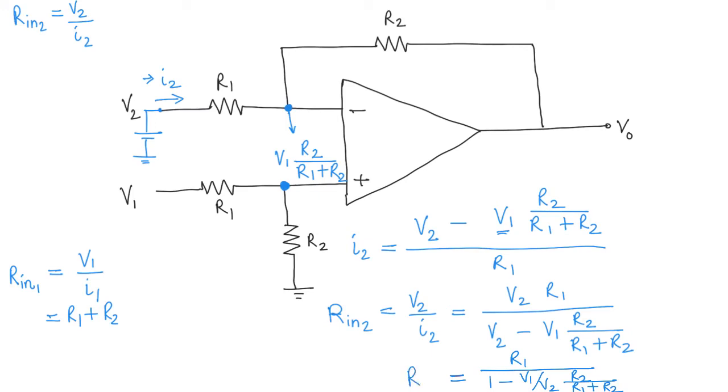That is R_in2, and you can see that R_in2 depends on the ratio of V1 and V2. If V1 and V2 are equal, then R_in2 is R1 divided by (1 - R2/(R1+R2)). If V1 is zero, we get R_in2 equals R1. As V1 increases, the input resistance starts to increase.